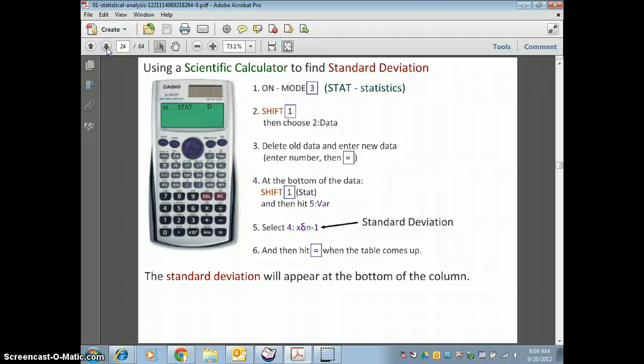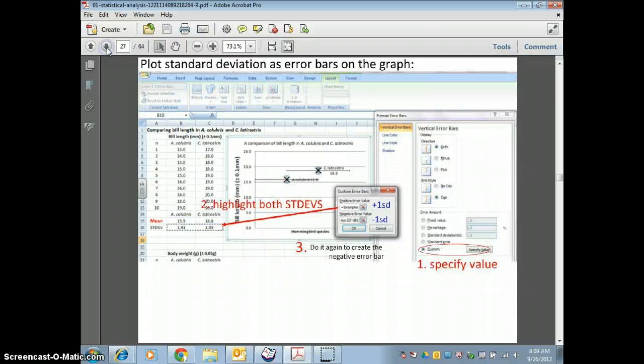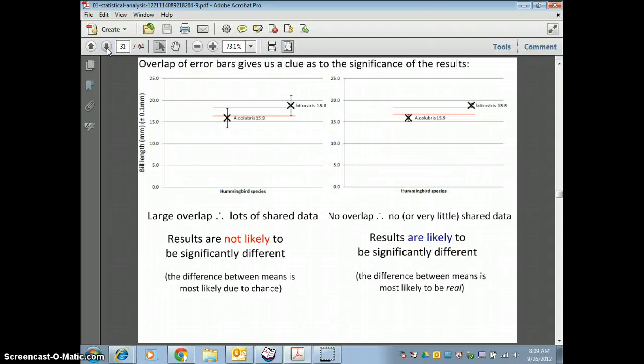You can use a calculator for all of this, or Excel. So really important. Once you have your data graphed, what does it tell us? When you have your error bars overlapping each other, that means that there's not likely to be a significant difference between the two data sets. But if there's no overlap between your two data sets, then it is likely that there's a significant difference.